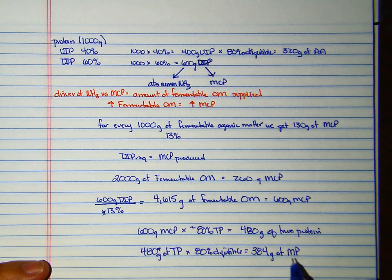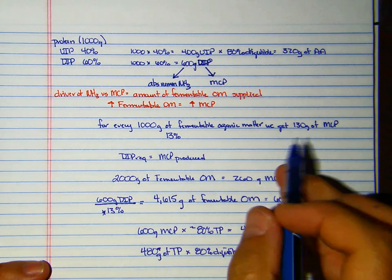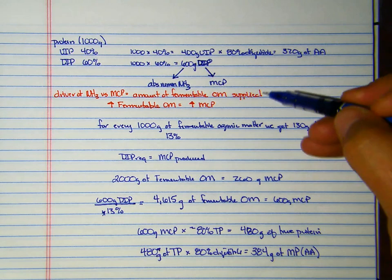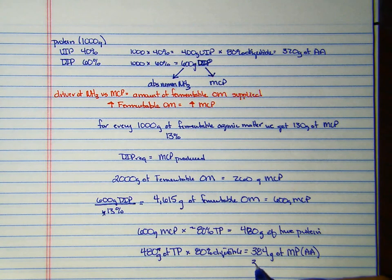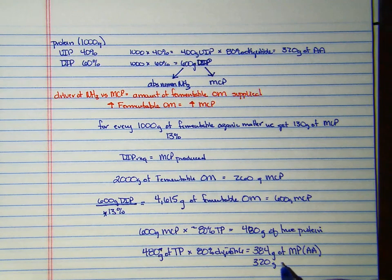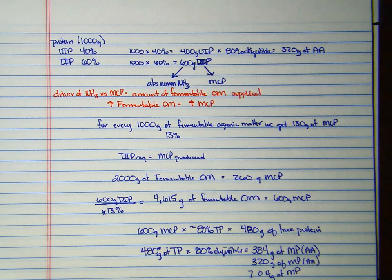We have 384 grams of MP or amino acids from the microbes. We have 320 from the UIP, so 384 plus 320 is 704 grams of MP.